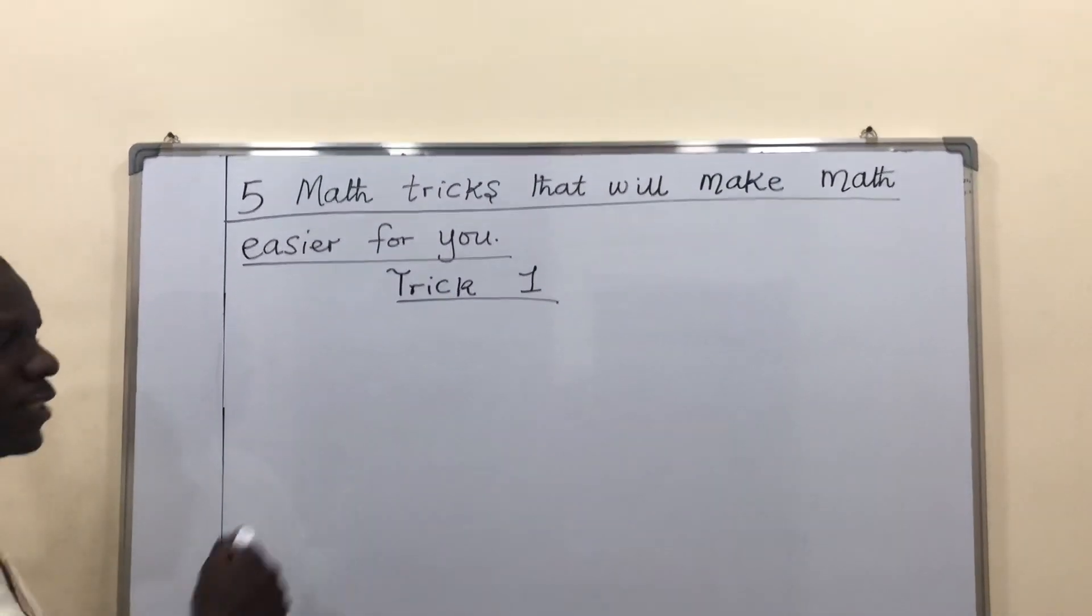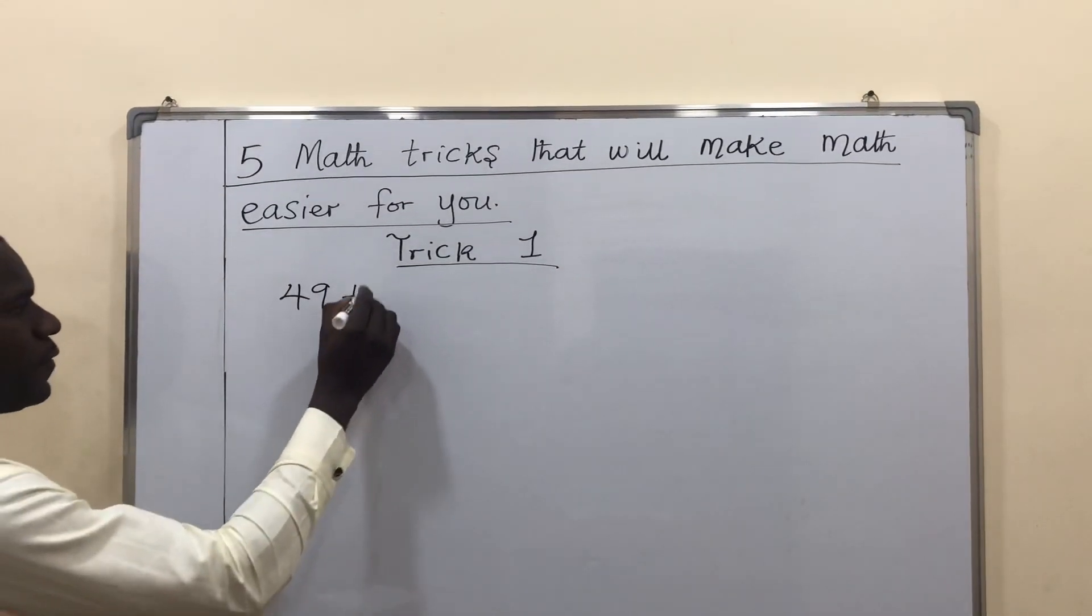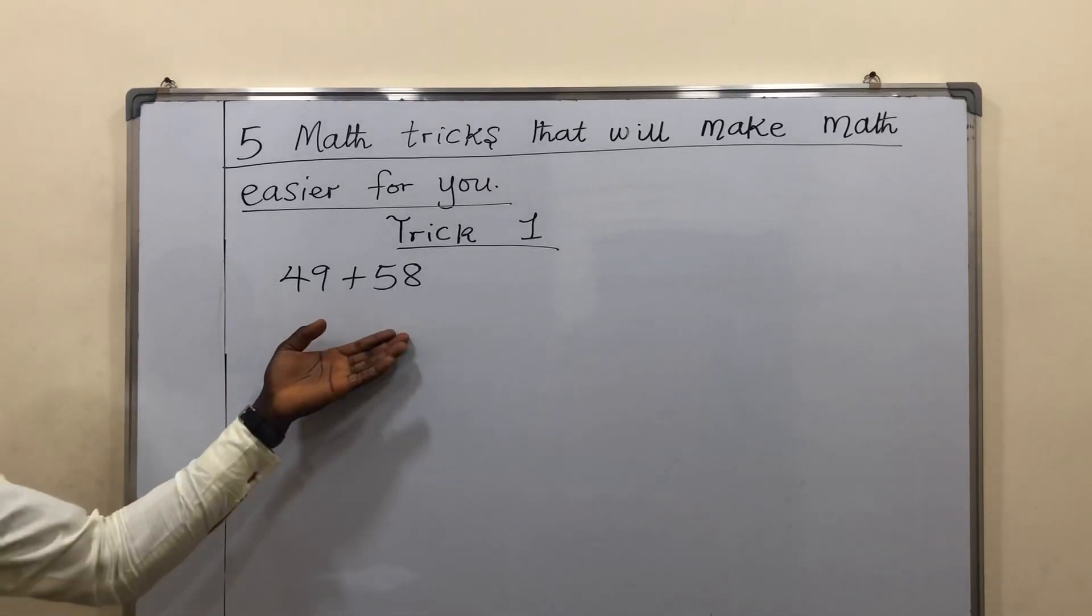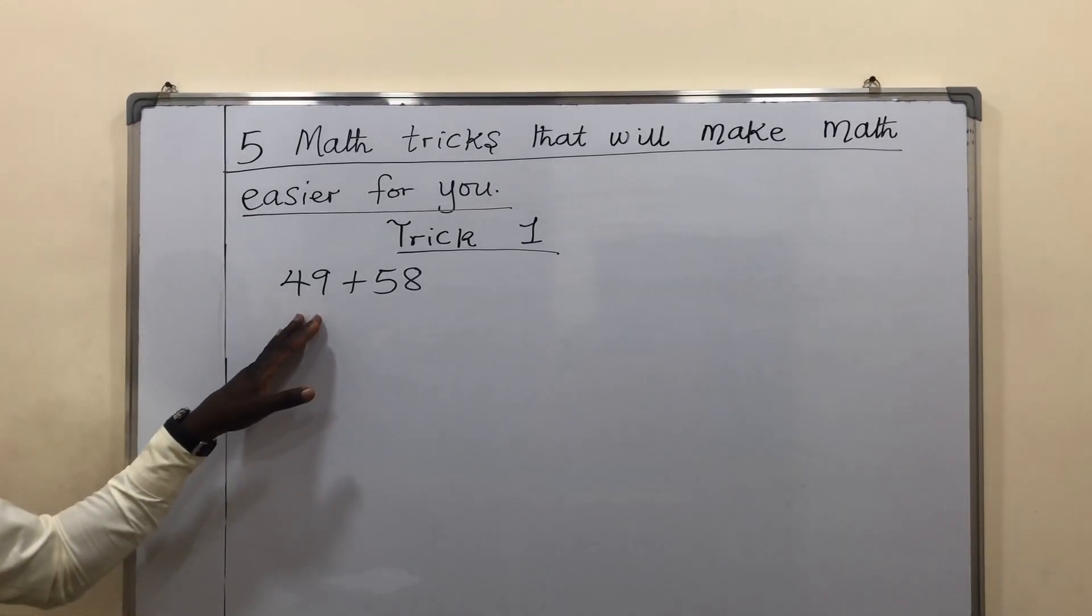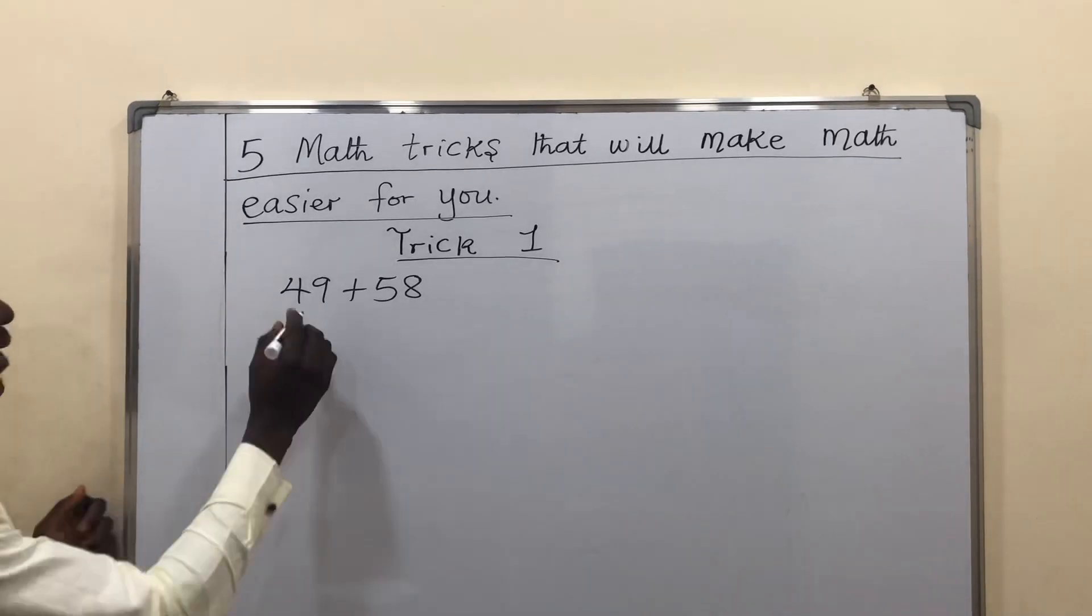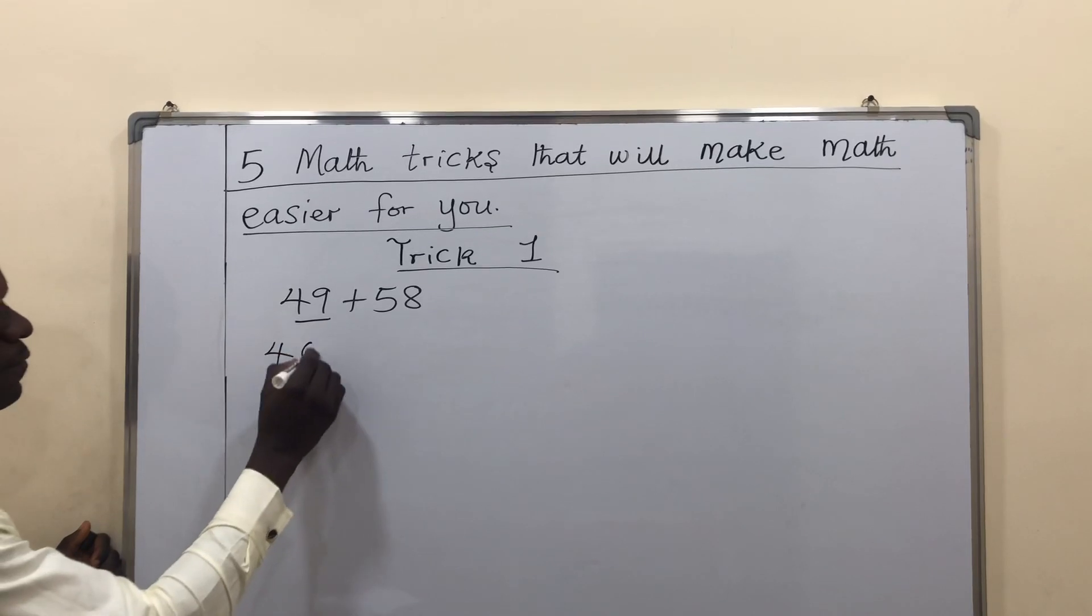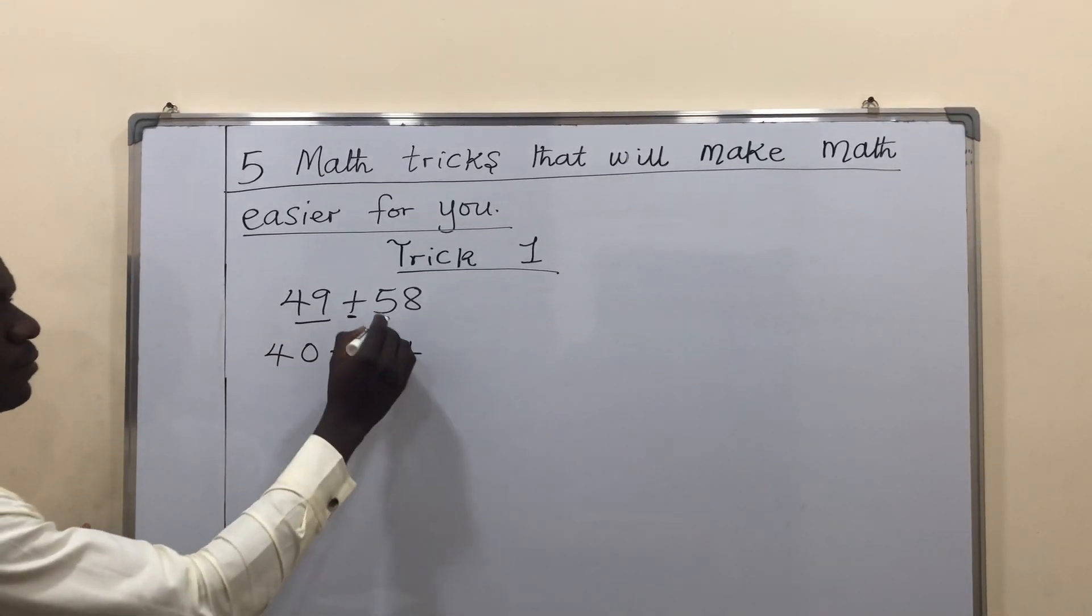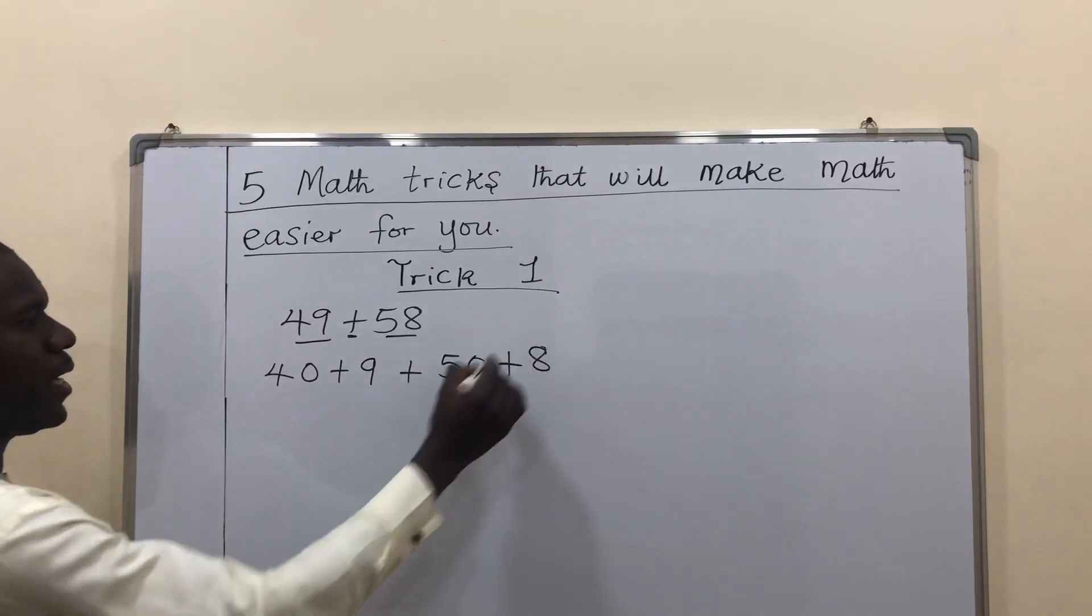Trick 1 has to do with addition and subtraction. So I am going to start with 49 plus 58. If you have an addition problem and you don't want to do it the conventional way, you can do it this other way. 49, let's expand it. You know that 49 is the same thing as 40 plus 9. This addition brings it down. 58 is the same thing as 50 plus 8.